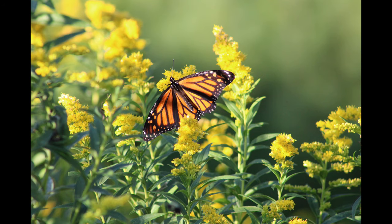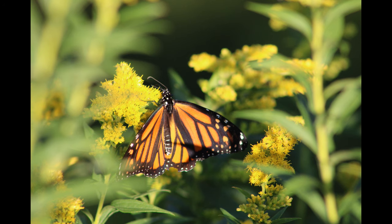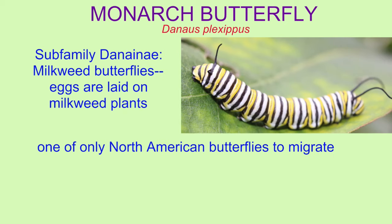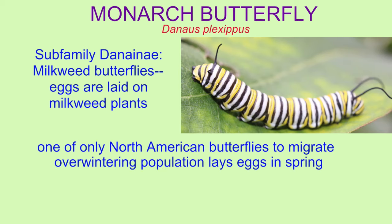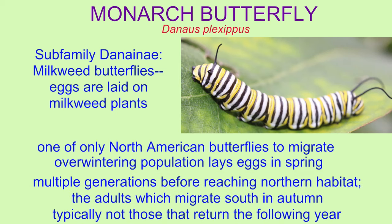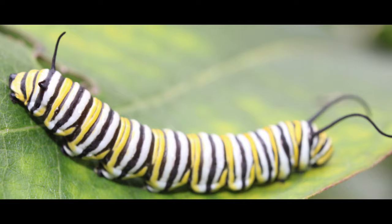Within the family, they are classified in the subfamily of milkweed butterflies, where adults lay eggs on milkweed plants. The larvae eat milkweed leaves and incorporate toxins from the plant into their skin so that the insects can deter predators using those toxins.